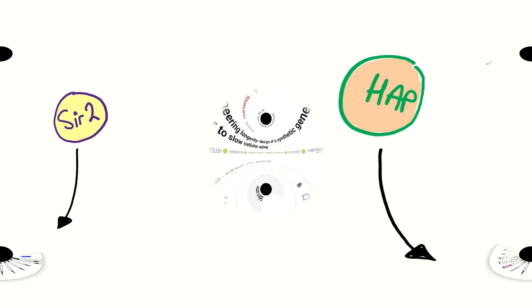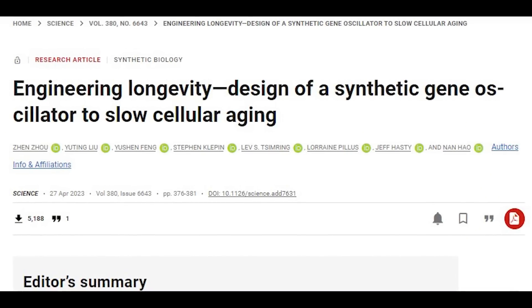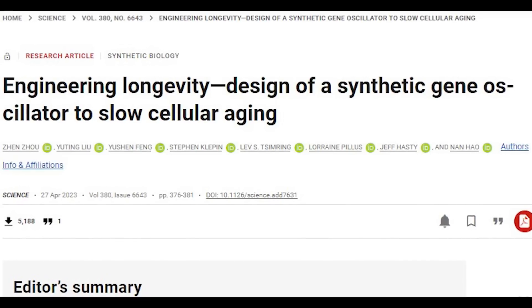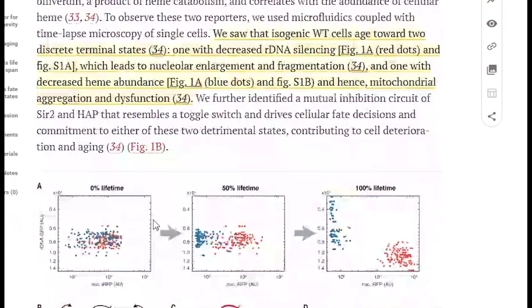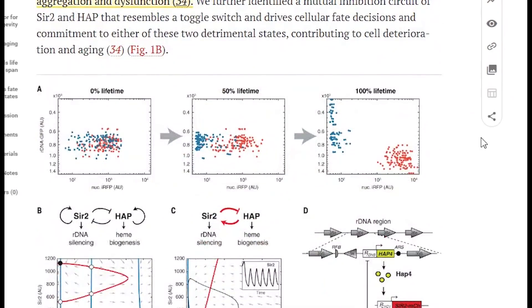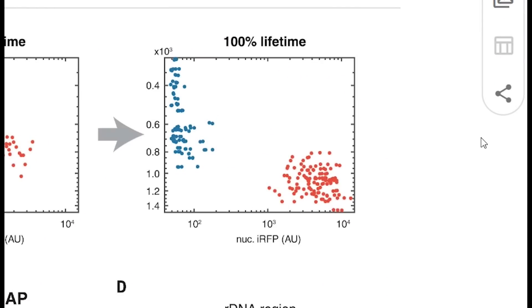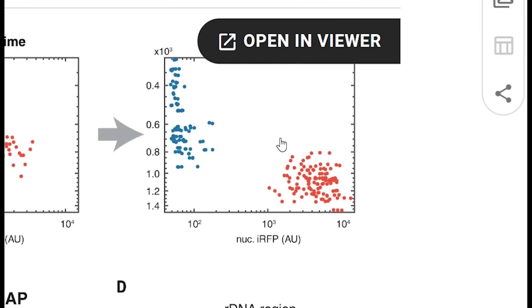Well that brings us to this latest paper, Engineering Longevity Design of a Synthetic Gene Oscillator to Slow Cellular Aging, where essentially they re-saw this dichotomous endpoint in their data where they see one fate chosen over the other.